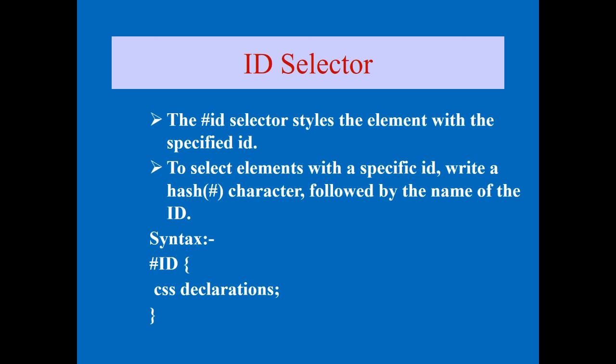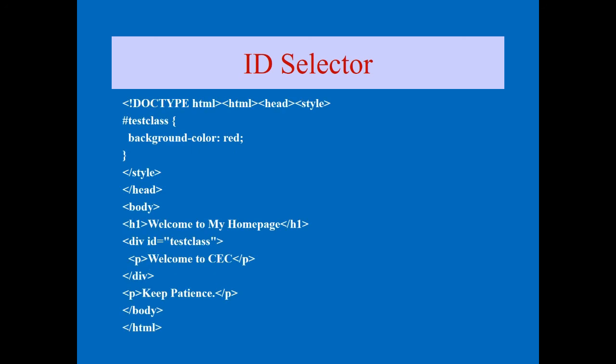The ID selector syntax: use the hash symbol, then the ID name, then curly brackets with the CSS declarations, then close the curly bracket. In an example comparing class and ID selectors: for the class selector you use dot, for the ID selector you use hash. The rest — property declarations like background-color — is written the same way.